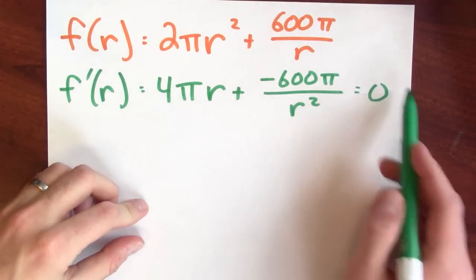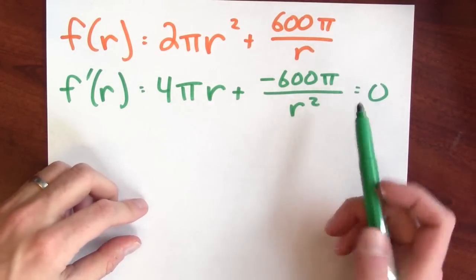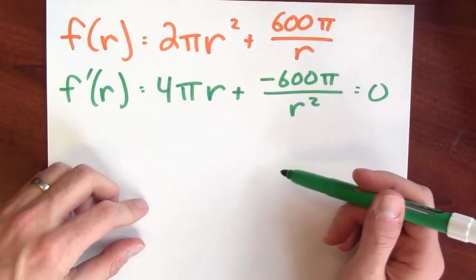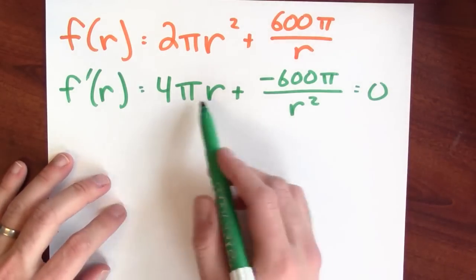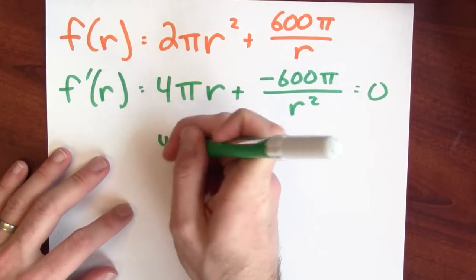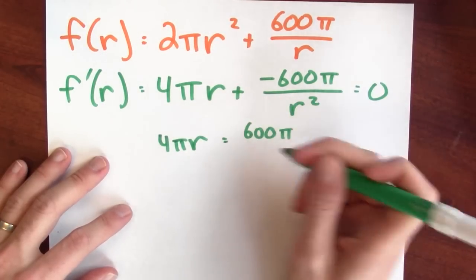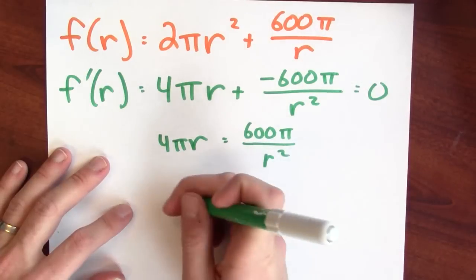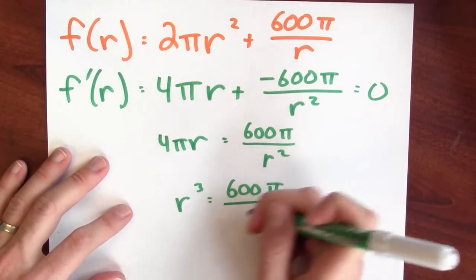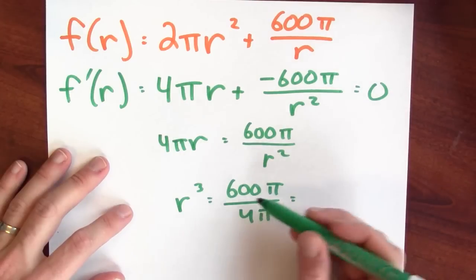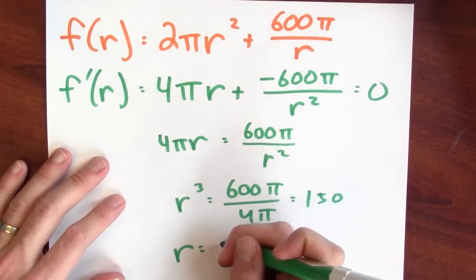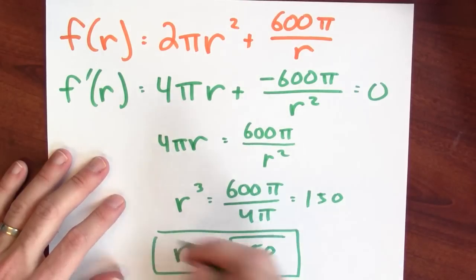Now I need to find the critical points. Critical points are where the derivative vanishes or where the derivative doesn't exist. This function though is differentiable on its domain. You might worry when r is equal to 0, but that's not even in the domain of the original function. Now I've just got to figure out when is the derivative equal to 0. I'll add 600 pi over r squared to both sides, so 4 pi r must be 600 pi over r squared. I'll multiply both sides by r squared and divide both sides by 4 pi, and I'll get r cubed is 600 pi over 4 pi. The pis cancel and 600 over 4 is 150, so r cubed must be 150. In other words, r is the cube root of 150. This is the only critical point.